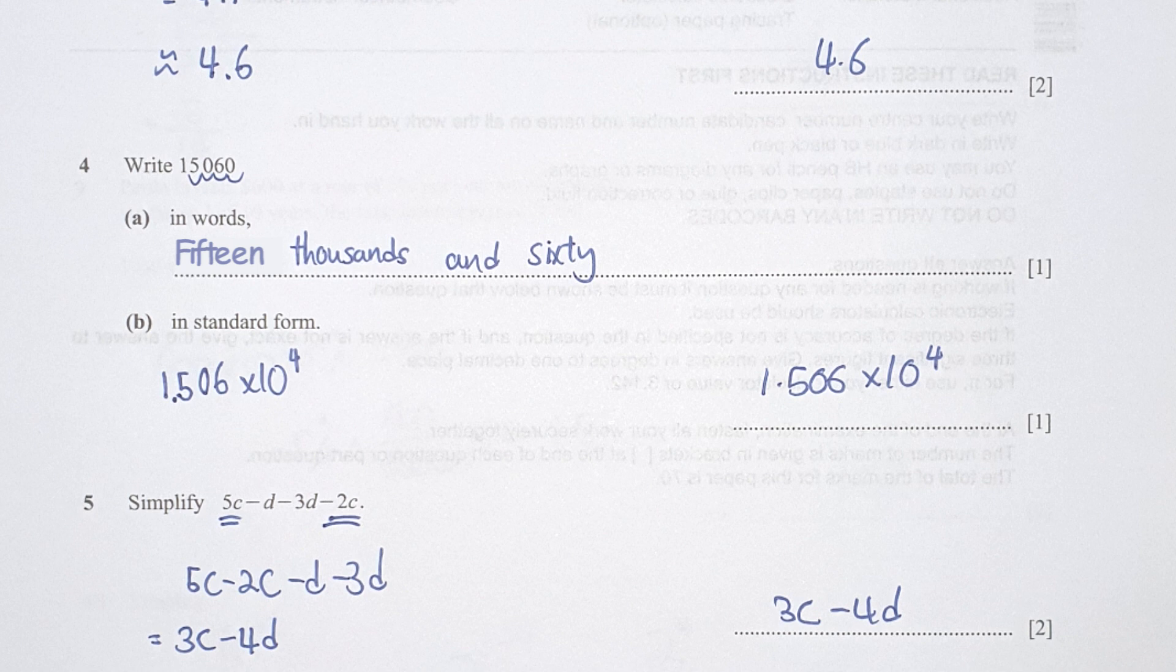Question 5, it's not as hard as you think, all you need to do is to group them accordingly. So 5c minus 2c minus d minus 3d. Then you run the calculation, you should get your final result as 3c minus 4d.